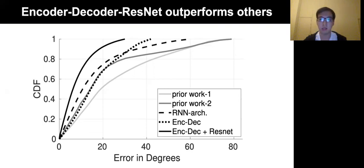In particular, the median accuracy is about 6.24 degrees and the 90th percentile accuracy is about 18 degrees.